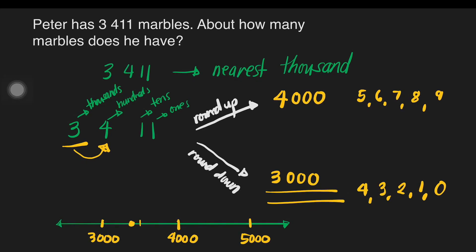For example, Peter has 3,855 marbles. About how many marbles does he have? In this problem, we have to identify the digit in the rounding place. And that is 3.